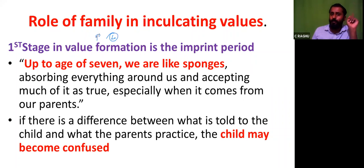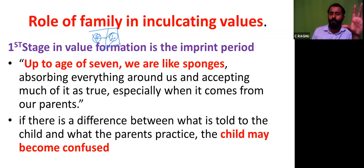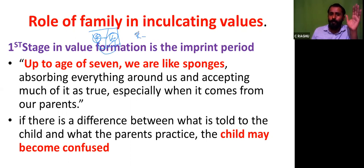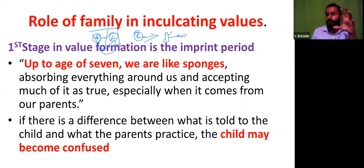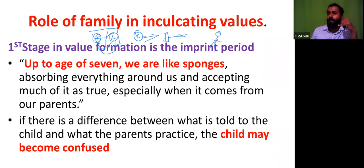If a parent says don't tell lies but then lies themselves — like telling a creditor on the phone 'I'm just near the office' while still at home — the child will be confused. What is true in one situation is not true in another. The first stage is very important: whatever happens in the first seven years, children will take as true. The role of family in inculcating values is crucial because it is the imprint period.